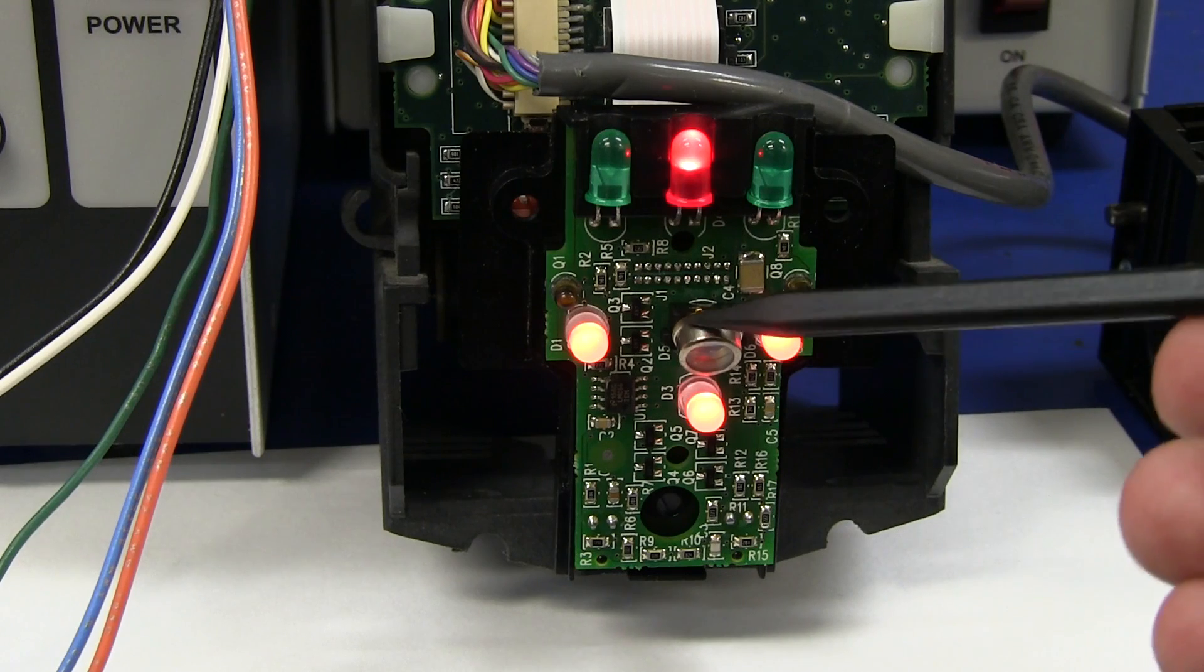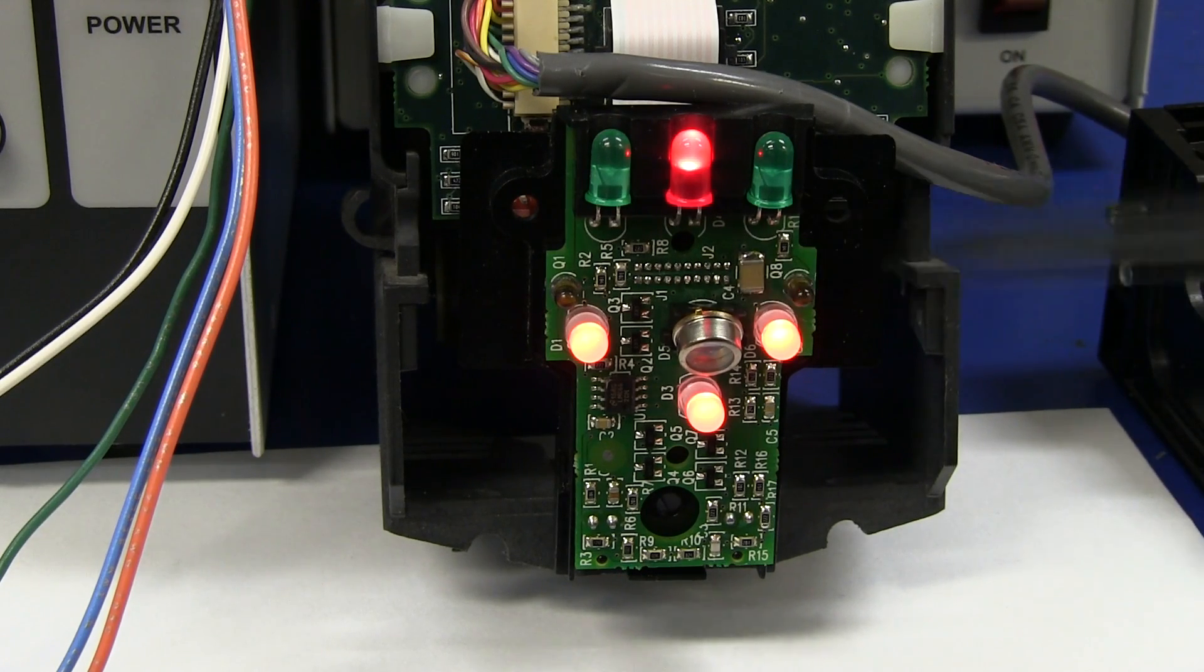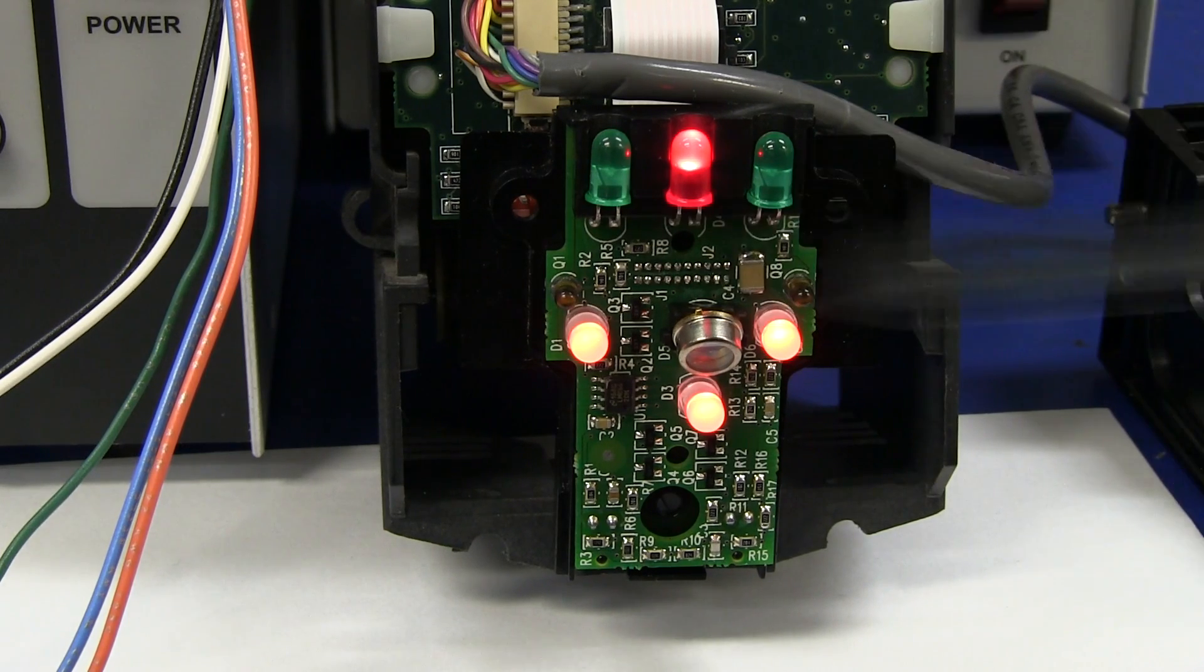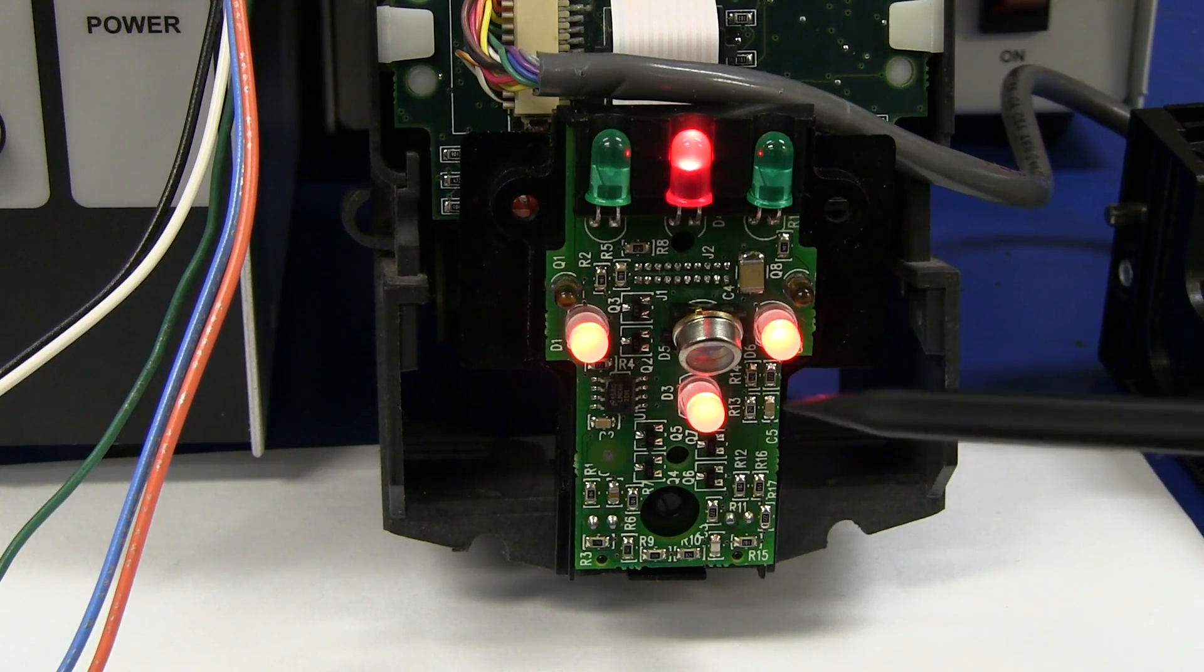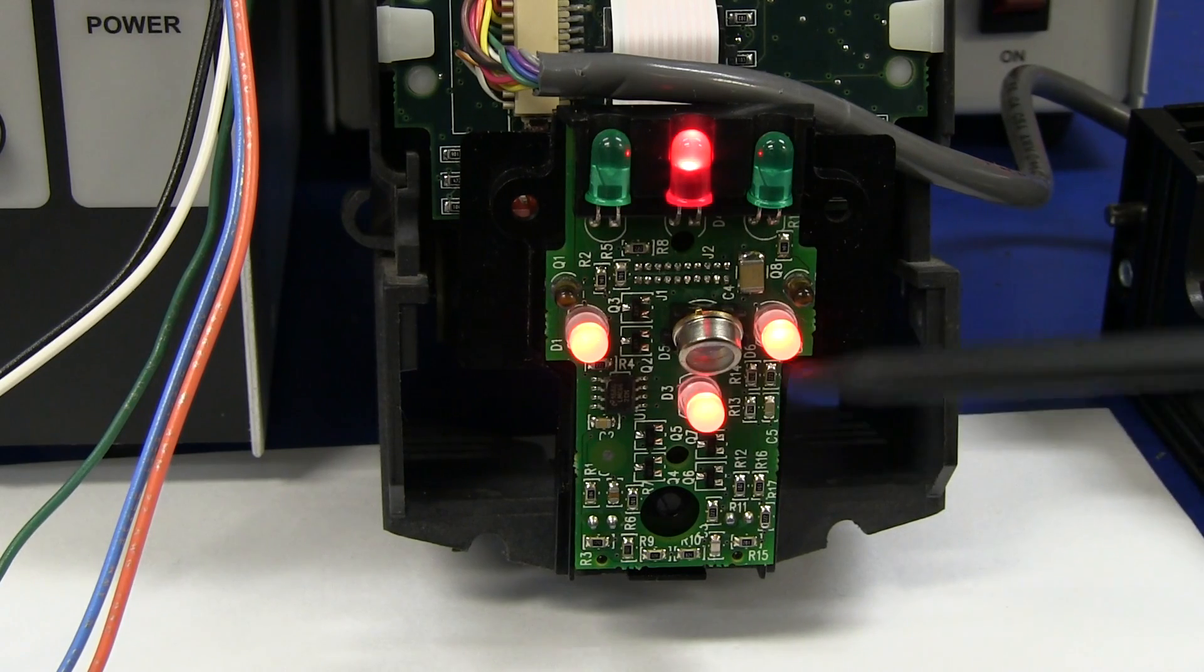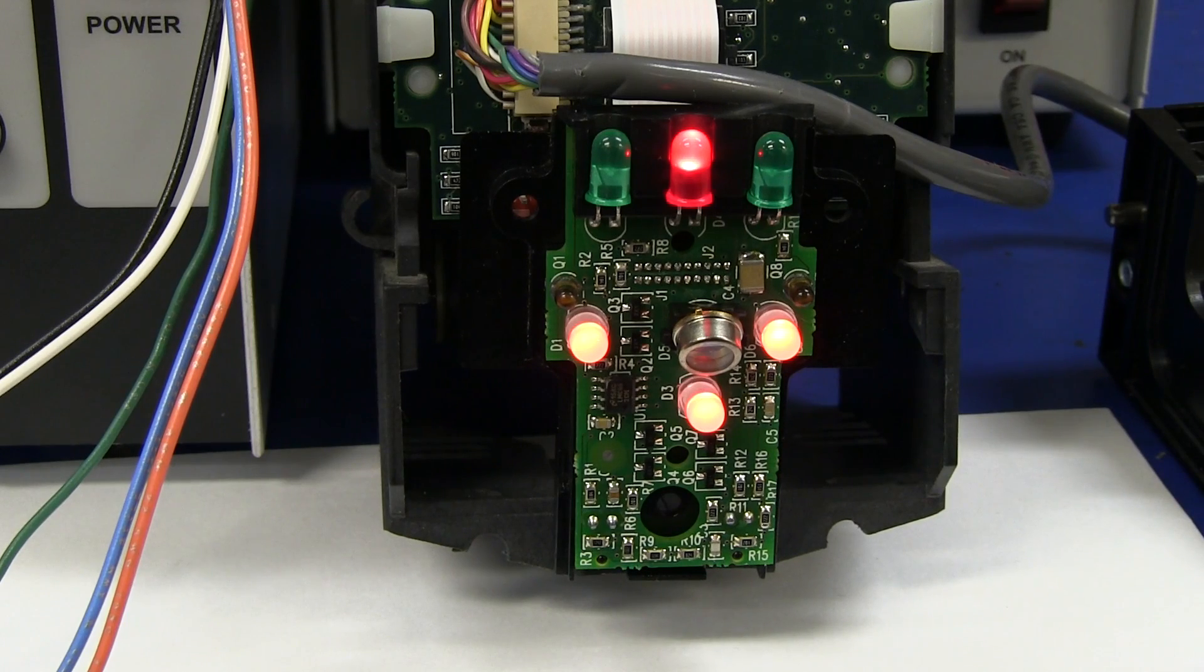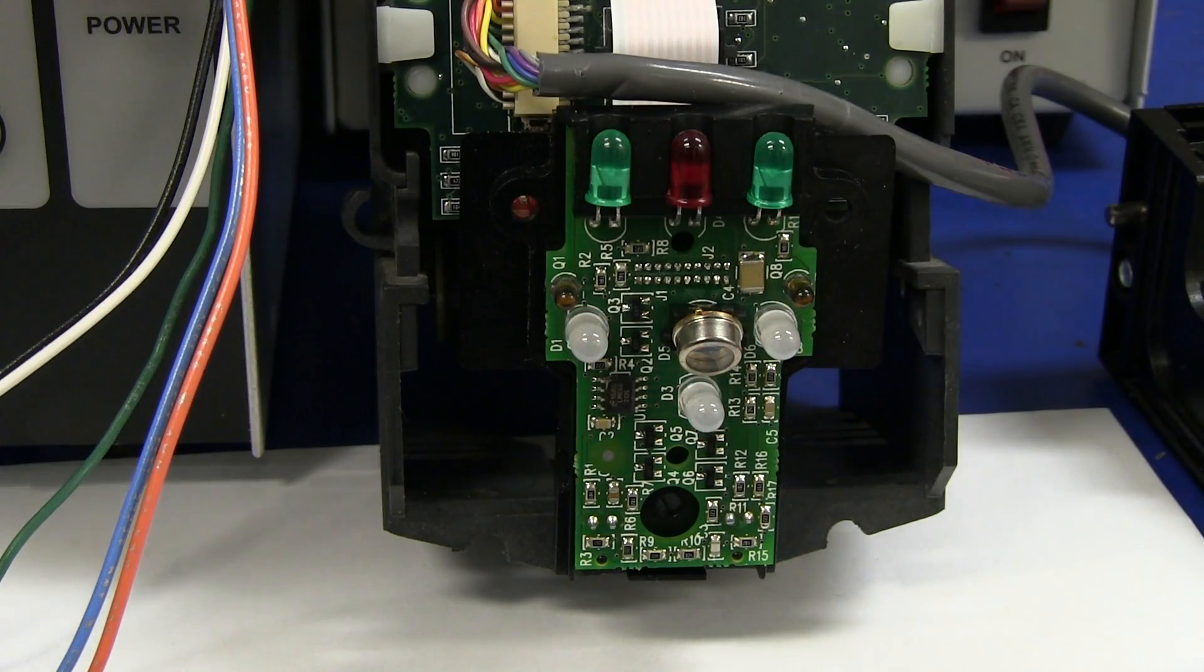Even though the photodiode in here is capable of going into the infrared range - from 400 nanometers up to 1100 nanometers - they're clearly just using red LEDs for the three of them. I haven't seen any other color yet, so we can turn the power off and watch it start up.